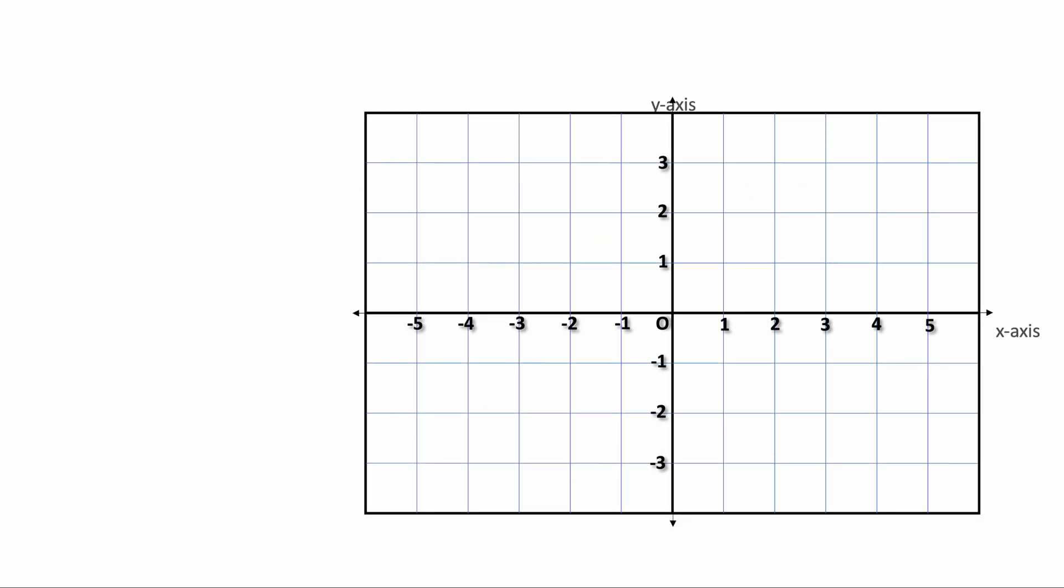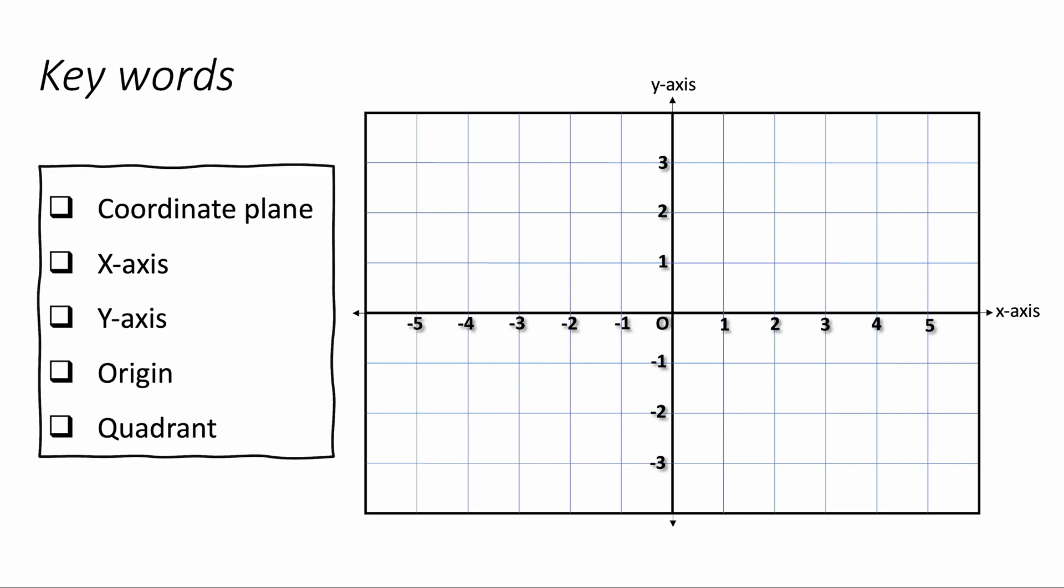A coordinate is a way of finding a position in maths and we find a position using the coordinate plane. This is a coordinate plane here and it's made up of an x-axis and a y-axis.